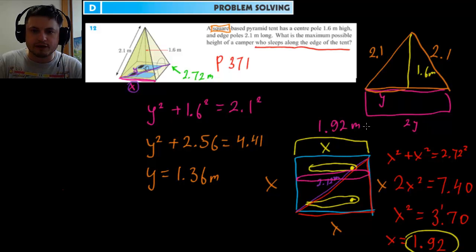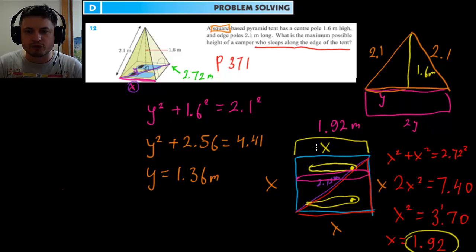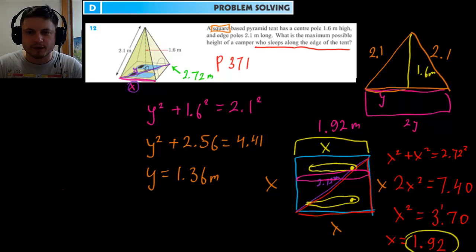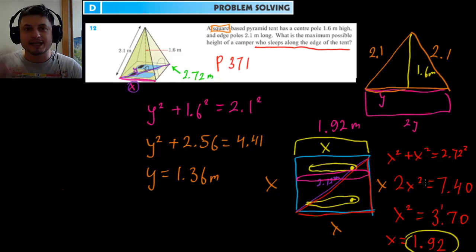That's the final answer and that's how you do three-dimensional problems. For two-dimensional problems you can usually do them in one step, but for three-dimensional problems you're looking at two different planes and doing two separate Pythagoras theorem calculations. Hopefully this was clear — good luck, thank you for watching, please subscribe, and bye bye.